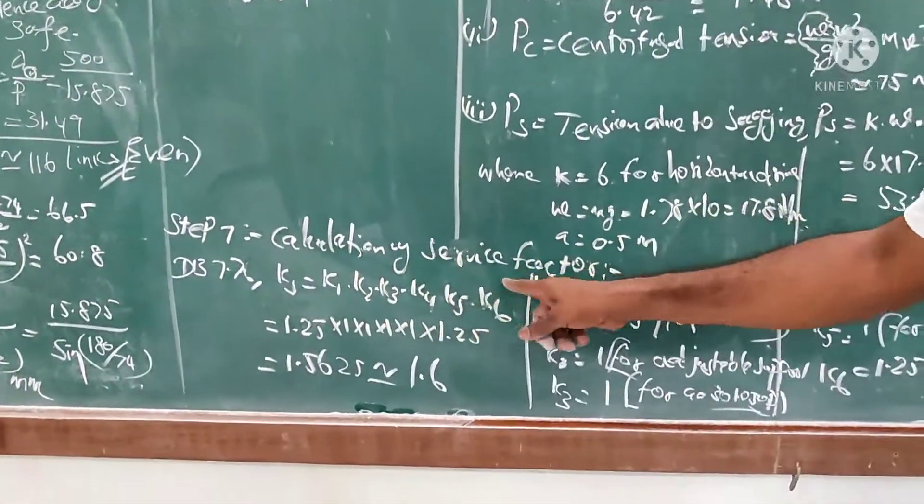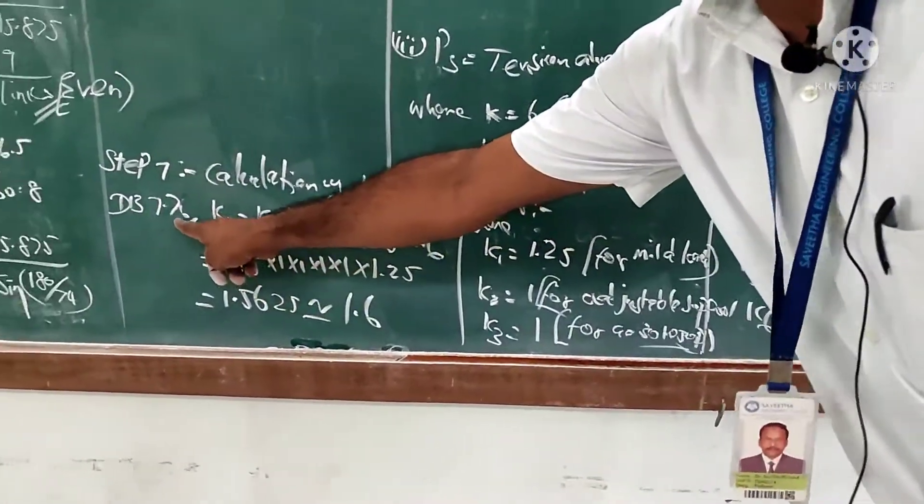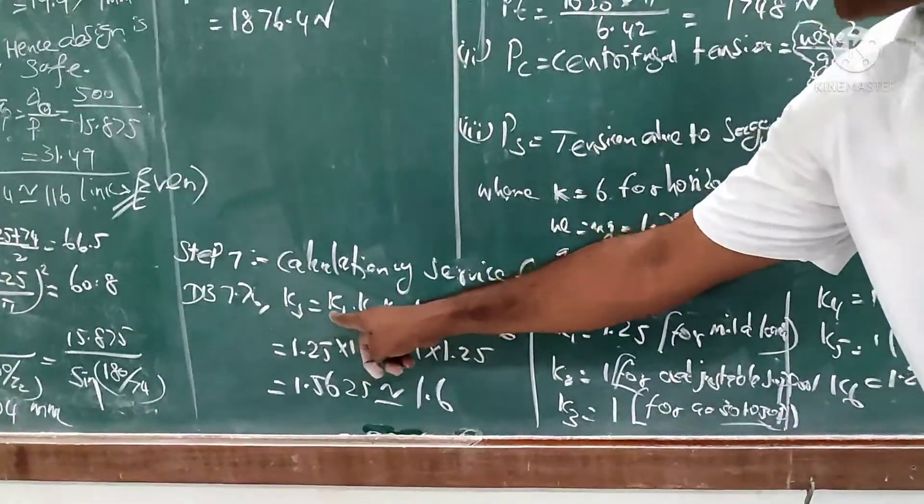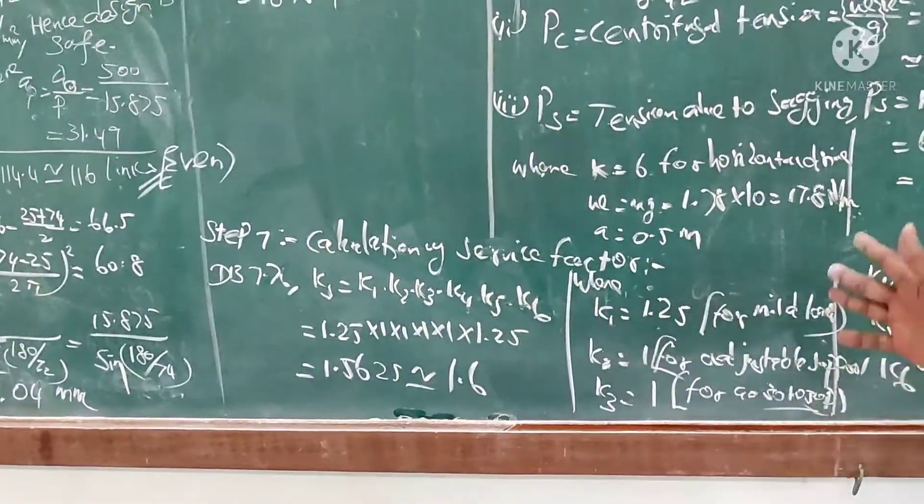Step number seven: calculation of service factor. From 7.72 to 6, Ks = K1 × K2 × K3 × K4 × K5 × K6 multiplication.